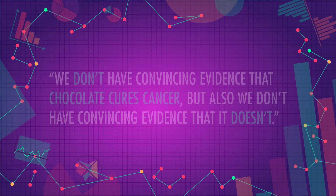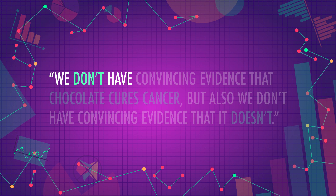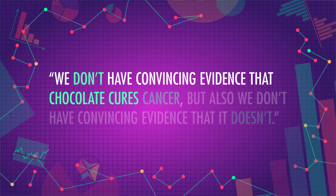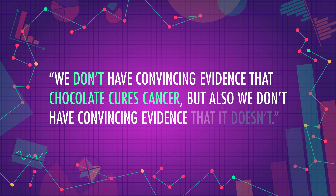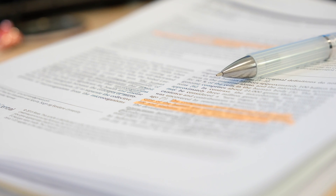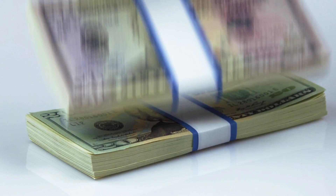Scientists who expect to see a relationship are usually hoping for the scenario where the null is false and they correctly reject it. In null hypothesis significance testing, failing to reject the null is a lack of any evidence — not evidence that nothing happened. So scientists and researchers are incentivized to find something significant. Academic journals don't want to publish a result saying something like, we don't have convincing evidence that chocolate cures cancer, but also we don't have convincing evidence that it doesn't. Popular websites don't want that either — that's like anti-clickbait. In science, being able to publish your results is your ticket to job stability, a higher salary, and prestige.